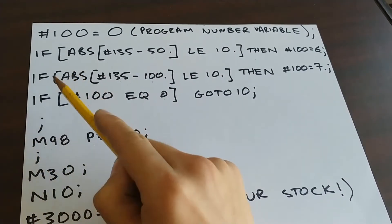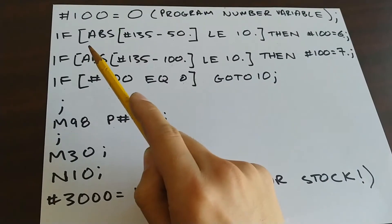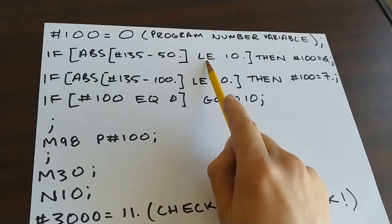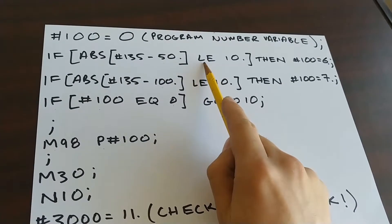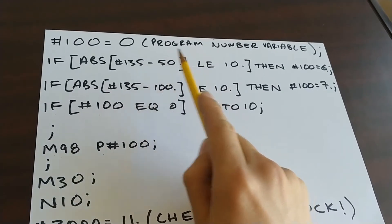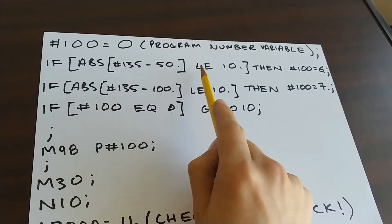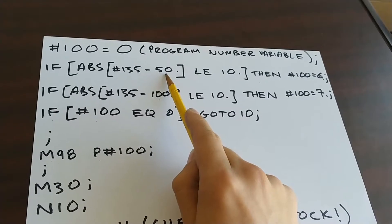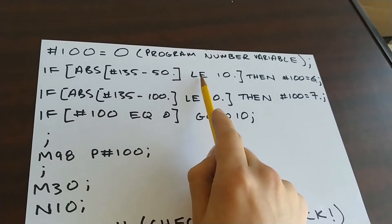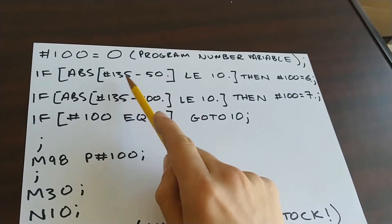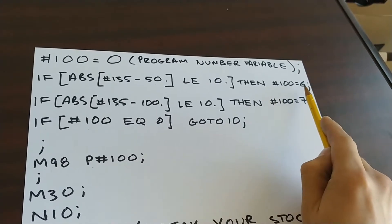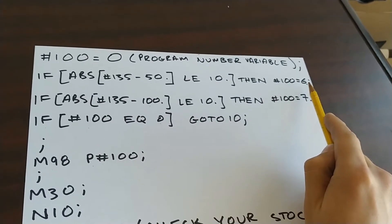Then I've got three more if statements. Again, these are the logic that will determine what it's going to do. So this time, instead of going to use greater than, I'm going to use less than or equal to. So what this is going to say, if the measured number is within plus or minus 10 of the desired number, not outside because I'm using less than instead of greater. So if measured number is within plus or minus 10 of 50, then I'm going to set pound 100 equal to 6 for program 6.